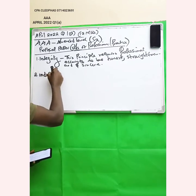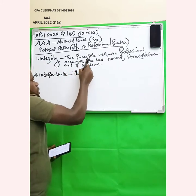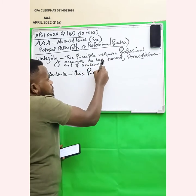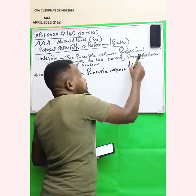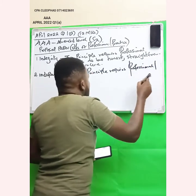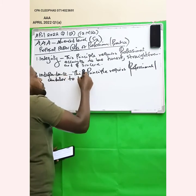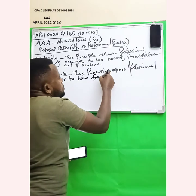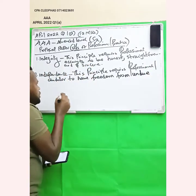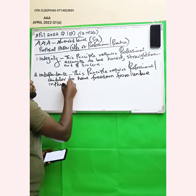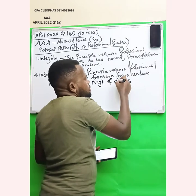Number two is independence. This principle requires professional accountants — who are the auditors — to have freedom from undue influence of management and other parties.